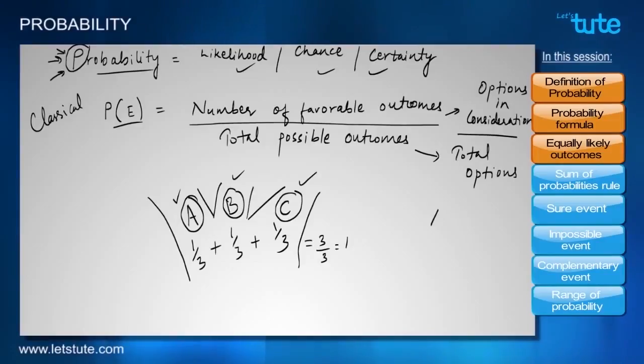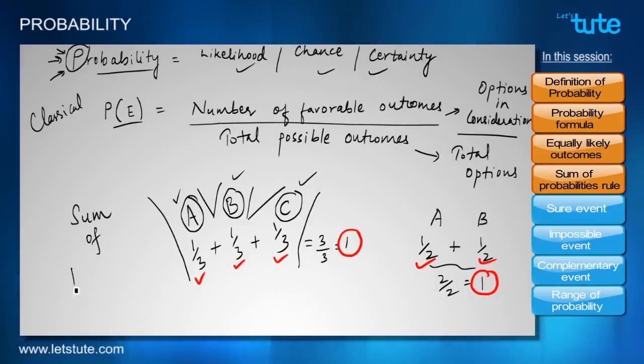Also in the case of two roads where we had only two options, the probability was 1 by 2. If we add them, then again we get 2 by 2, that is equal to 1. What do we observe here? We observe that probabilities involved in an event, if added together, give us a sum total of 1. This rule is called the sum of probabilities rule.